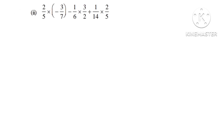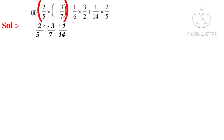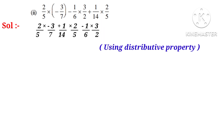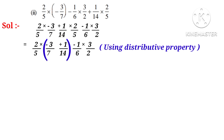Now let us do the second problem. Solution: 2 by 5 is a common factor here. So let us write the first term in the first place, the last term in the second place, and the middle term in the last place. Now, using distributive property, let us take 2 by 5 as a common factor. In brackets: minus 3 by 7 plus 1 by 14 minus 1 by 6 into 3 by 2. Observe that the fractions in the brackets have different denominators, so to make them like fractions we multiply both numerator and denominator of the first fraction by 2.